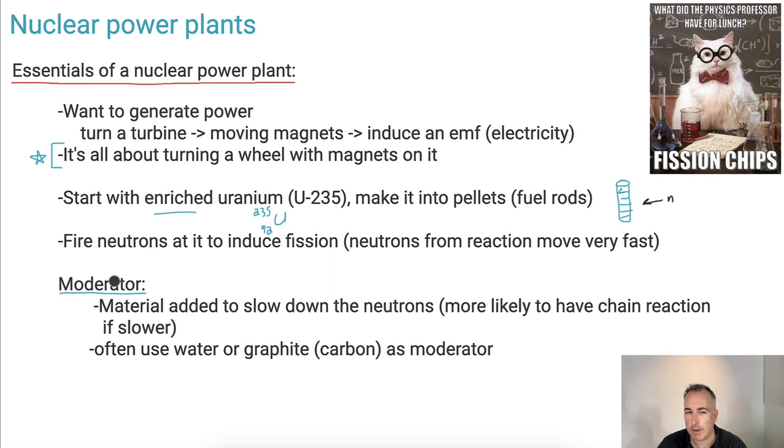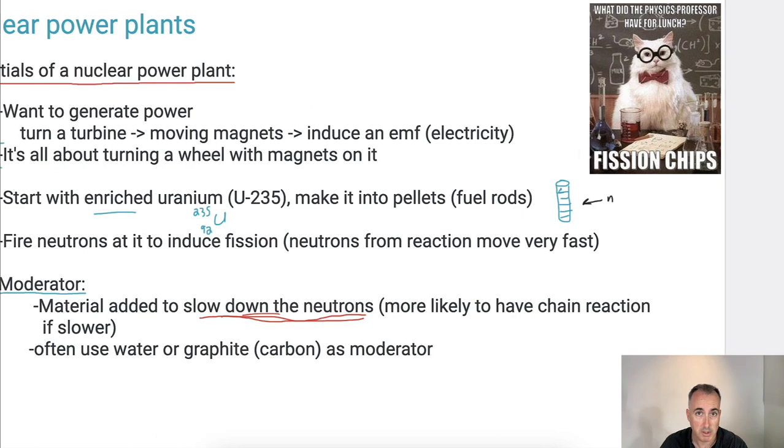We have something called a moderator. You want this around the fuel rods because you want to slow down the neutrons. The neutrons that are made in the chain reaction, they go really fast. And if you want them to run into other things to make more reactions, you need to slow them down. So a moderator is just a material you use to slow down the neutrons. That's the key thing with a moderator. Moderator is to slow down the neutrons because you're more likely to have a chain reaction. What are they made of? Well, it's usually graphite, like carbon, for example.